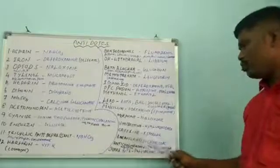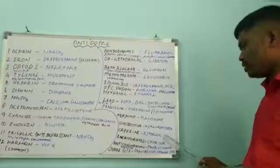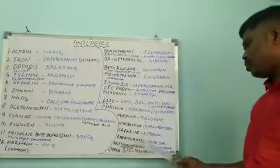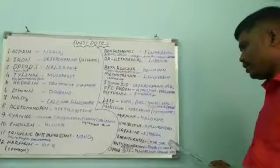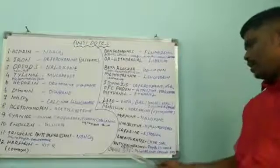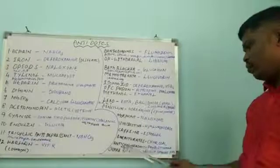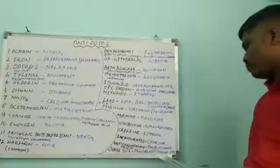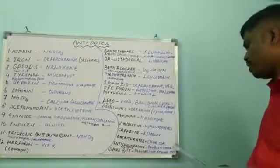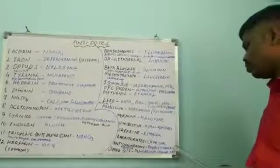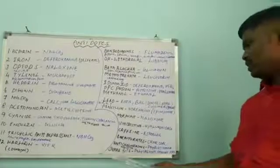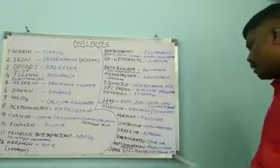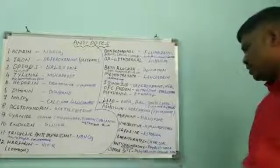In caffeine overdose, esmolol is used as an antidote. In barbiturates overdose, activated charcoal is used as an antidote. In anticholinergics like atropine overdose, physostigmine is used as an antidote. In snake bite, polyvalent immunofab or anti-snake venom is used as an antidote.